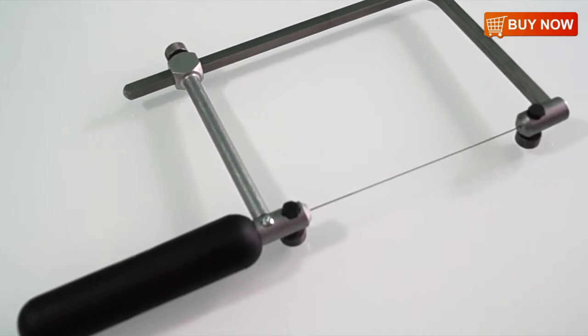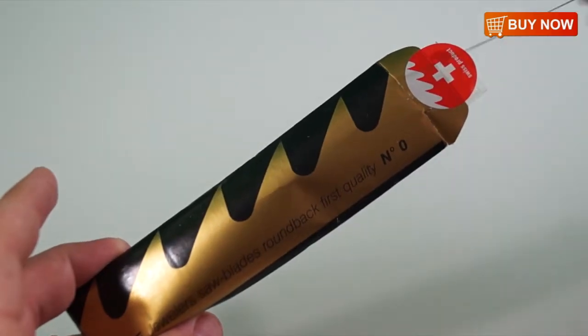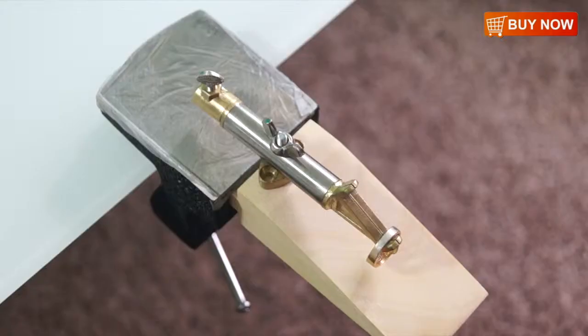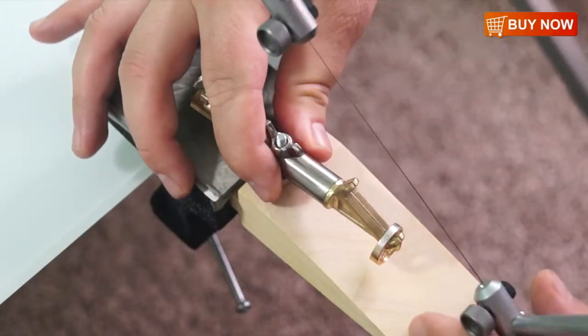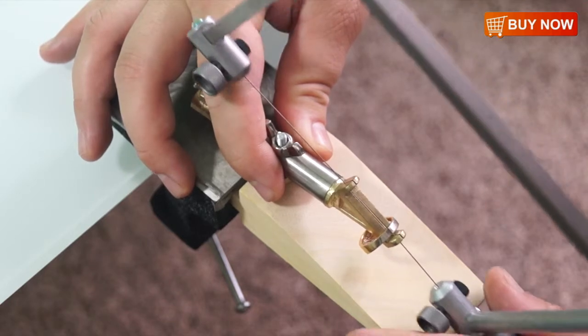This is the Grobet Swiss made adjustable 4 inch saw frame for the discriminating jeweler who demands high quality tools. This revolutionary saw frame is lightweight and made of the highest quality spring steel.